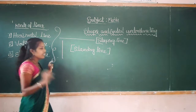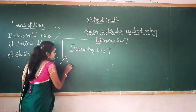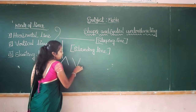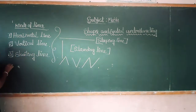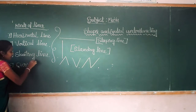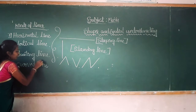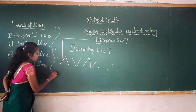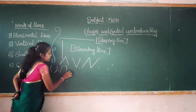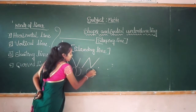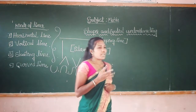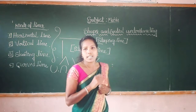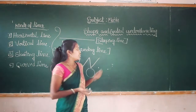This is called slanting line. And the other one is curved line. In the previous class, I told you that some English letters have straight lines and some English letters do not. Once again, let's write on the blackboard some English letters.